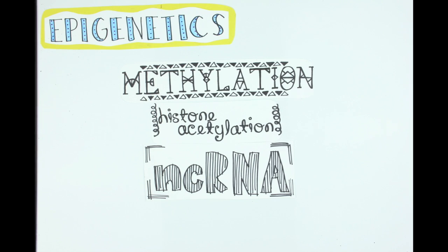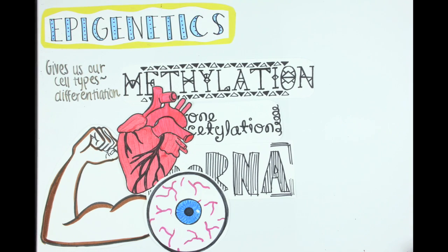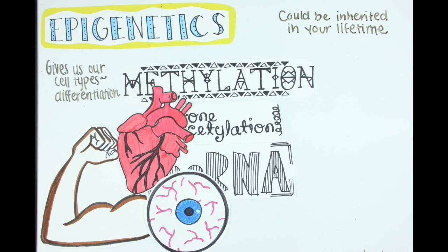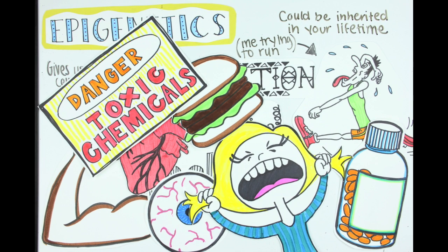Changes in methylation, acetylation, and non-coding RNA give us our different cell types by turning off unneeded genes in each cell, or they can be inherited in your lifetime as a result of environmental factors like stress, physical activity, diet, medications, and chemical exposure. Some changes can be harmful and may lead to disease development, and some can just affect the way you look.